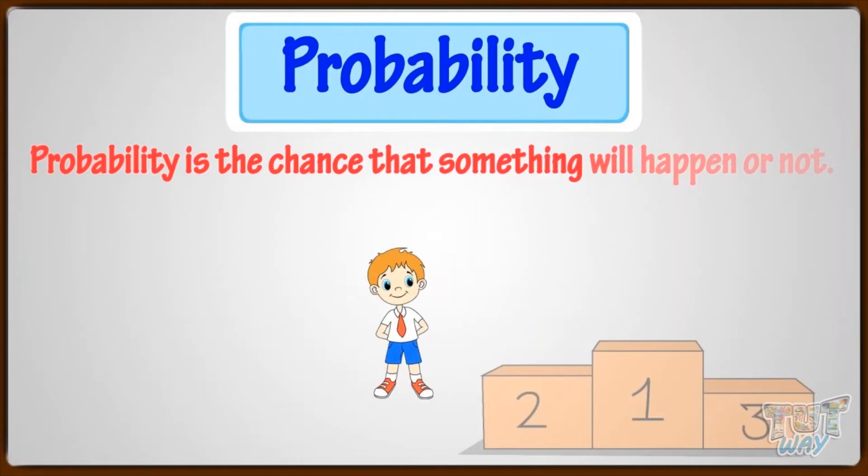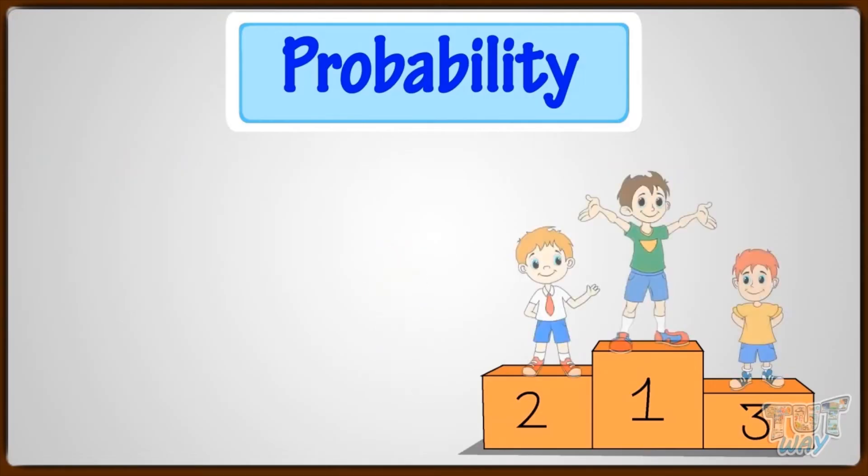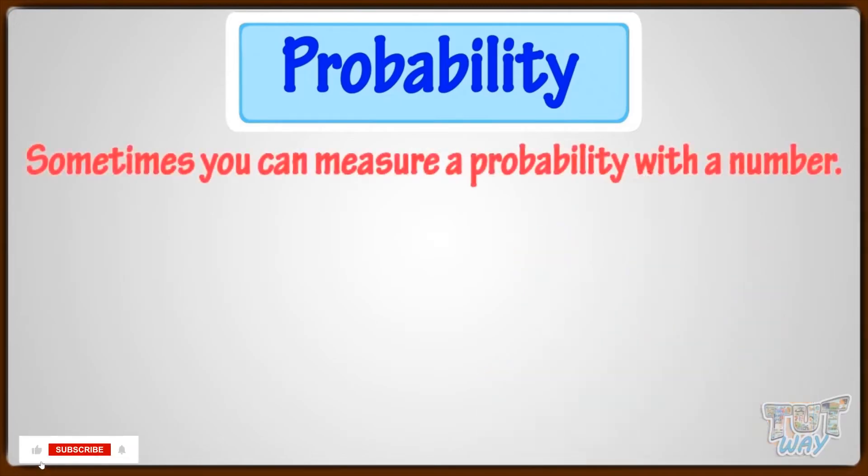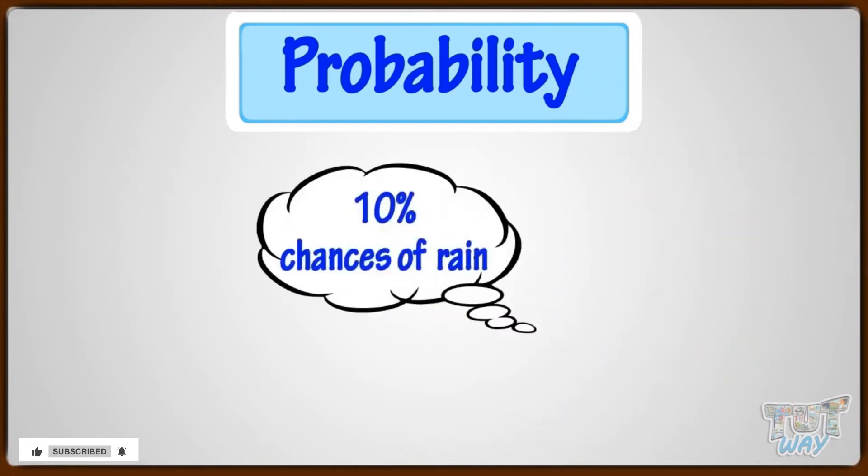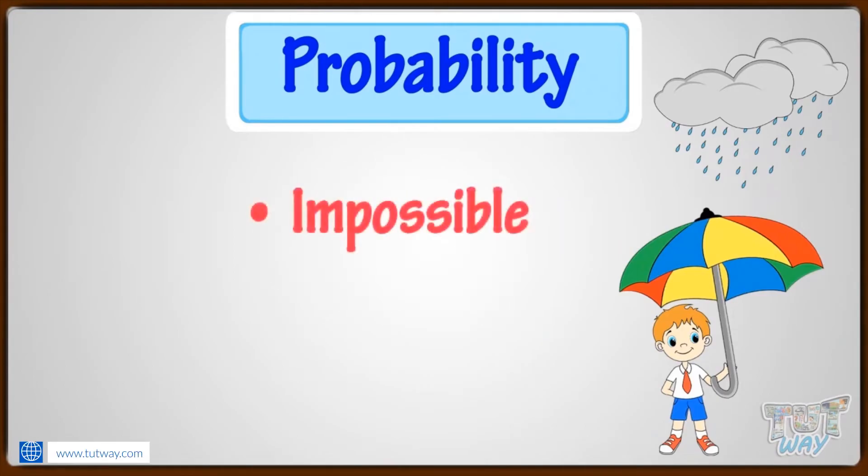Probability is a chance that something will happen or not, or how likely it is that some event will happen. Sometimes you can measure a probability with a number like 10% chance of rain, or you can use words such as impossible, unlikely, or possible.